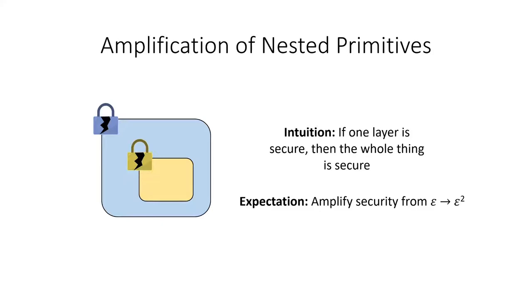Nested FE is a special case of the more general idea of nested primitives. The intuition here is that if at least one layer is secure, then the whole thing should be secure. So, in order to get to the message inside both the blue and the yellow encryptions, you'd have to break through both. If each layer is broken with probability epsilon, you'd expect that both layers would be broken with probability roughly epsilon squared. Proving this formally is actually quite difficult, and this is what we will show next. For the remainder of this talk, instead of considering nested FE, I will consider nested public key encryption, as it is simpler — but the techniques do also apply to nested FE.